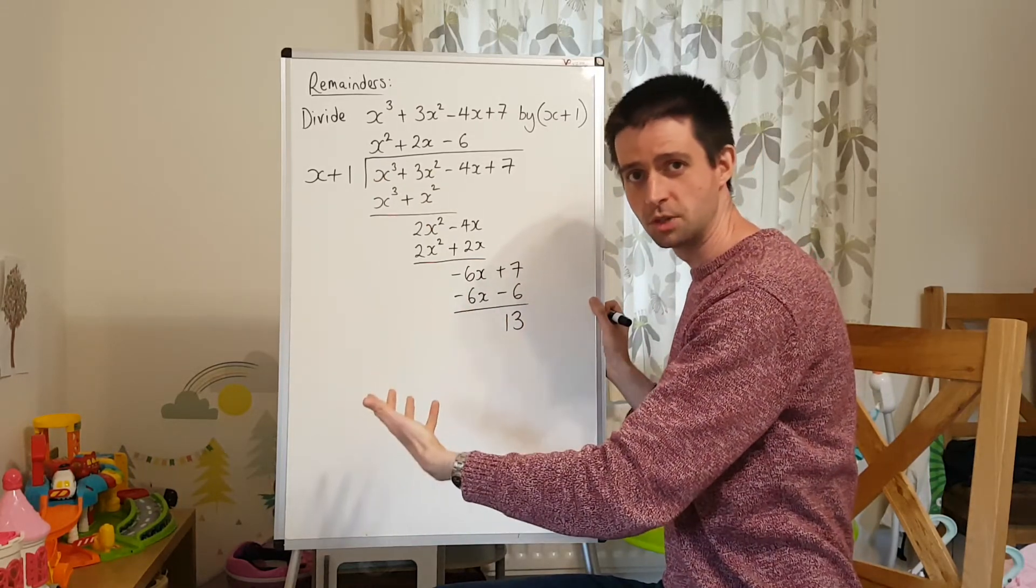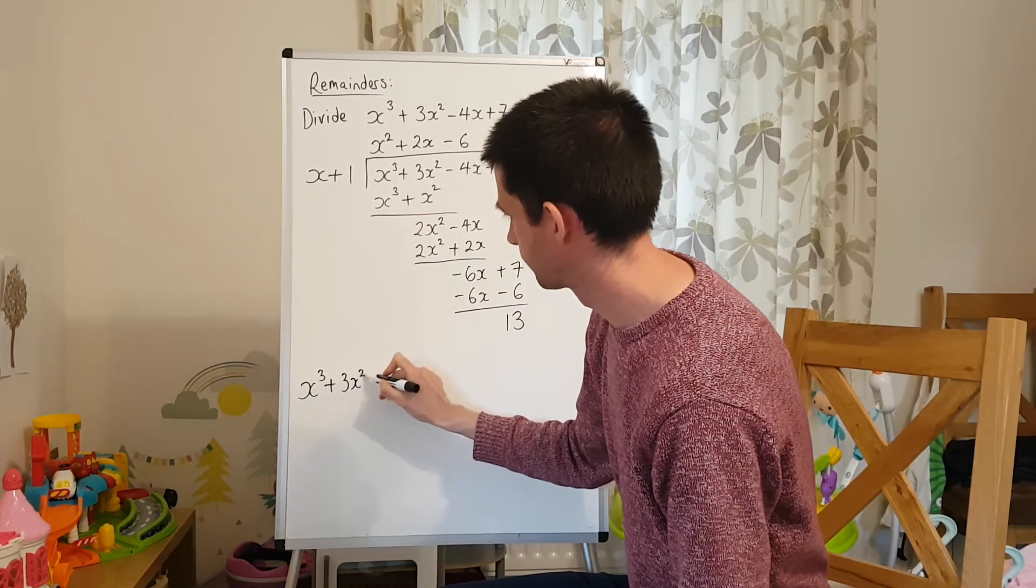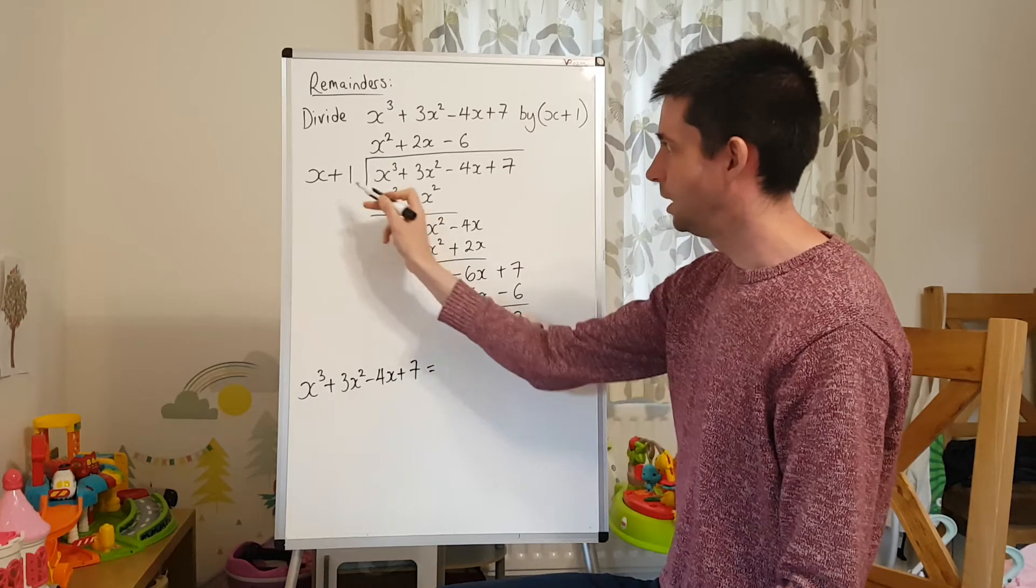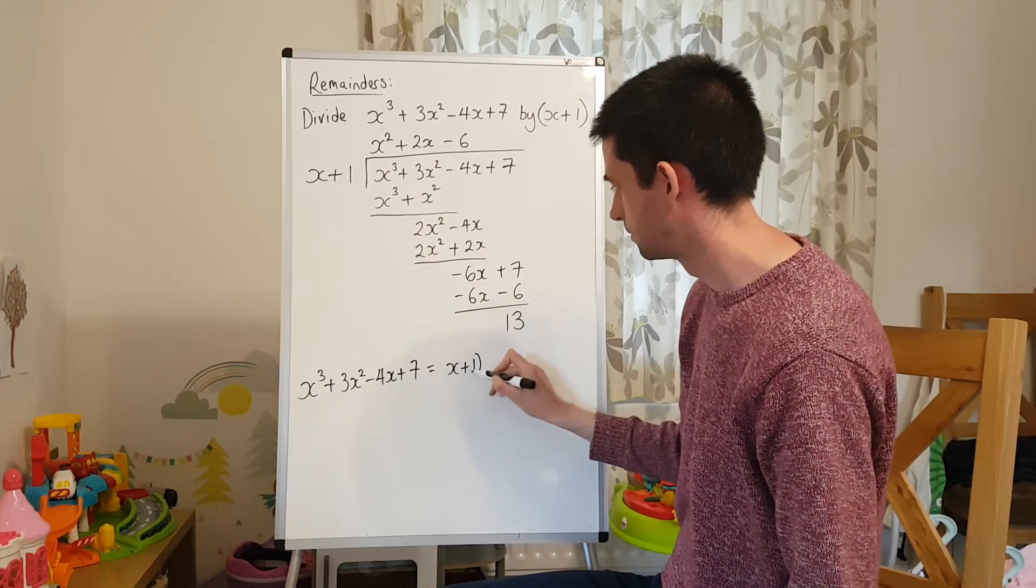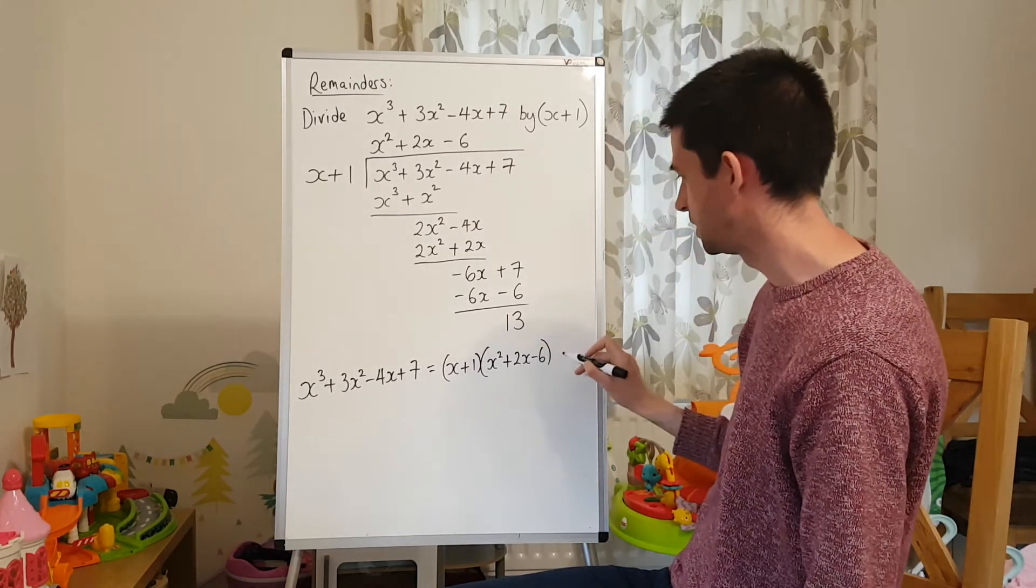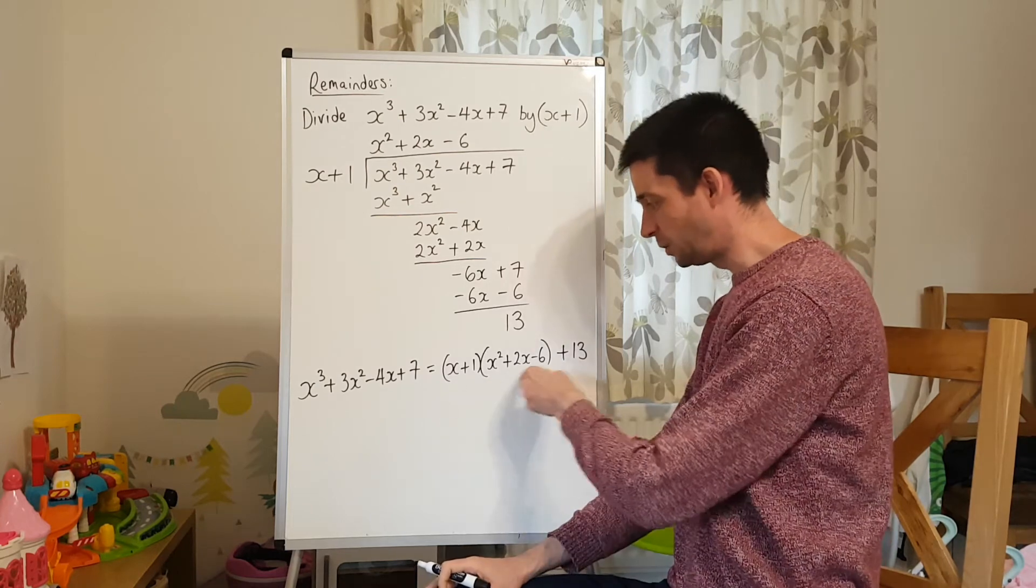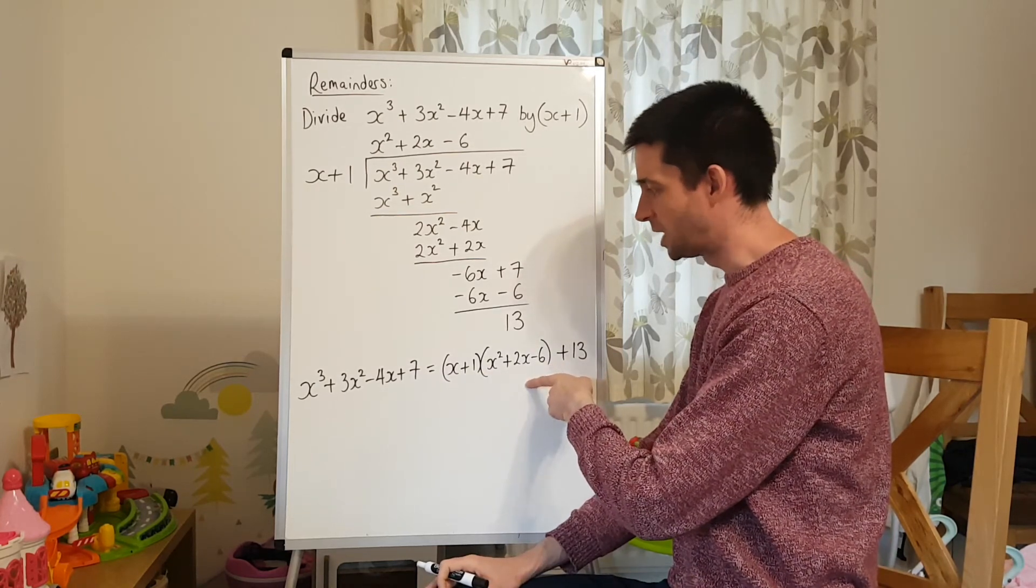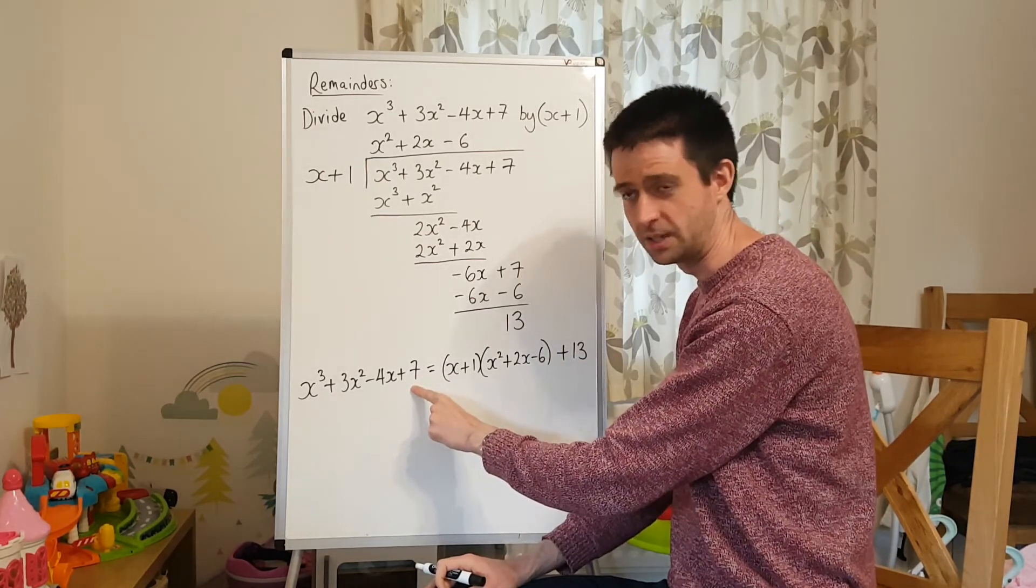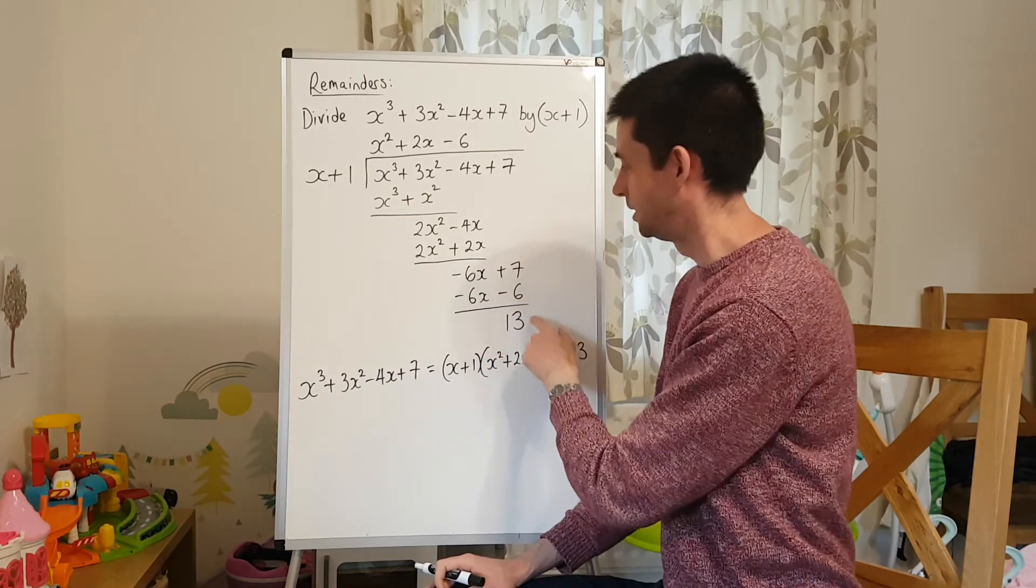So that means we just have to write this result slightly differently. We would write that x cubed plus 3x squared minus 4x plus 7, which is our original expression, can be written as x plus 1 times by x squared plus 2x minus 6. But because of this remainder, outside of all of that, would be plus 13. And what that would mean is, if you expanded all this back out, you would have almost this, but not quite. You'd have to add 13 on to get back up to the plus 7. And that's how to deal with these when the expression doesn't go into it exactly as a factor, and you get a remainder here.